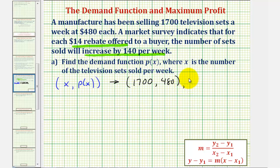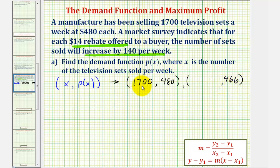To find the second point, we know that if we decrease the price by $14, the number sold will increase by 140. So if we drop the price by $14, $480 minus 14 would be $466, and that would increase the number of televisions sold by 140. So 1,700 plus 140 would be 1,840.